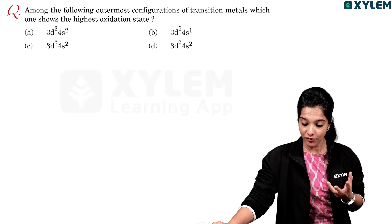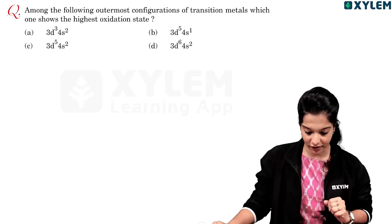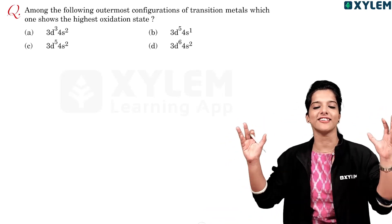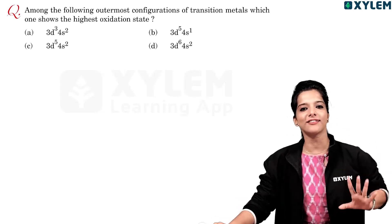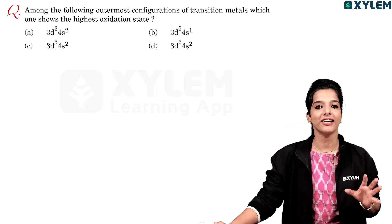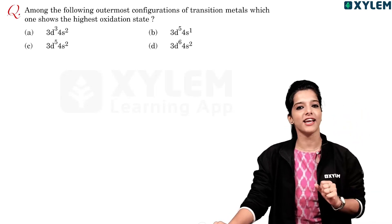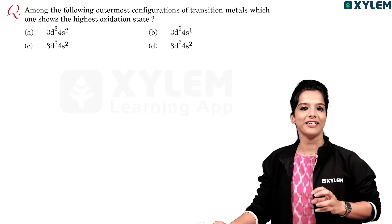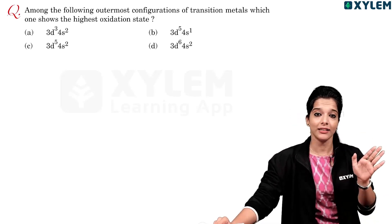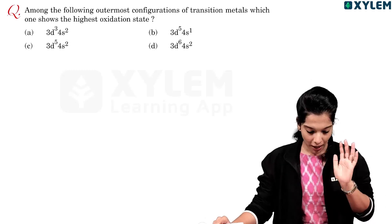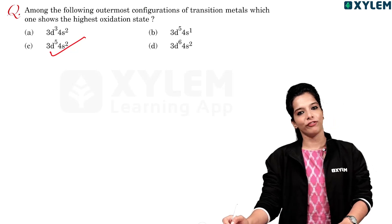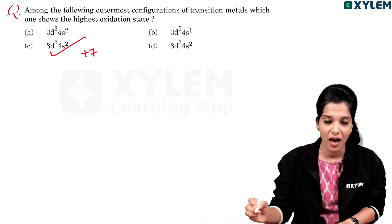Which transition metal shows the highest oxidation state? Manganese shows a +7 oxidation state. After the manganese configuration, the outer electronic configuration gives the highest oxidation number of +7.